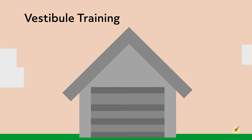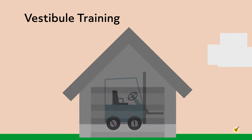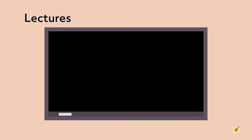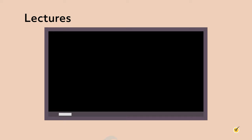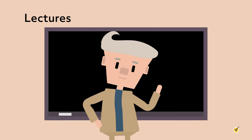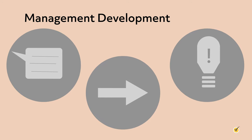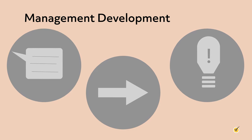Vestibule training allows workers a hands-on experience of the functions they will be performing without actually being at the workplace. A forklift placed in a warehouse set up for training potential operators is an example of vestibule training. Lectures are in-depth teachings provided by an instructor and can be performed at a conference or university campus. Management development: if a company recognizes that some of its employees display key characteristics of managers, they will likely endorse a management development plan to teach prospective managers about coaching, delegating, and effective problem solving.